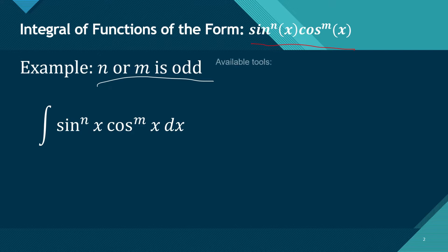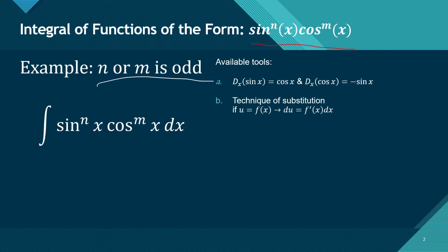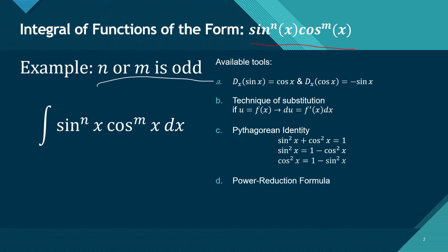These are the tools that might be helpful when we are working with functions such as this. We know that the derivative of sine is cosine and the derivative of cosine is negative sine of x. The technique of substitution might also be helpful — if we let u equal f of x, then du equals f prime of x dx. The Pythagorean identity, the power reduction formula, and the power rule will also be very helpful.